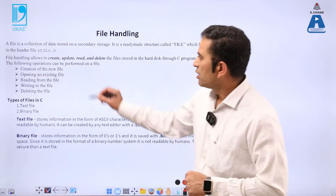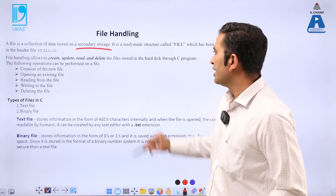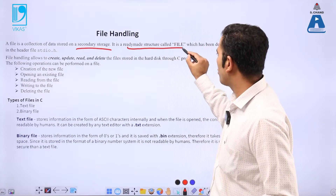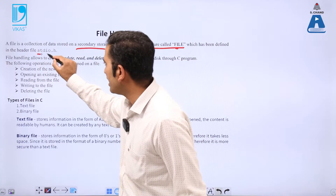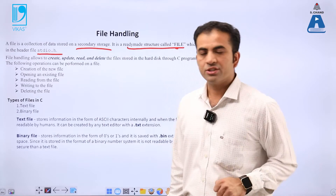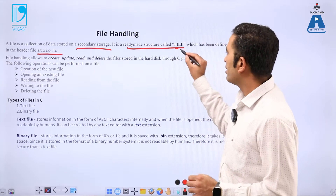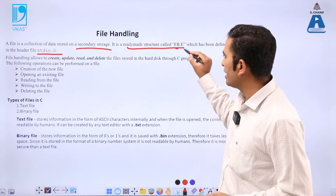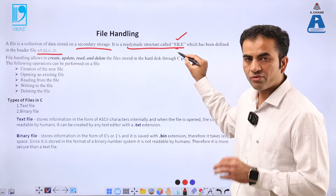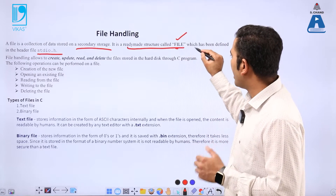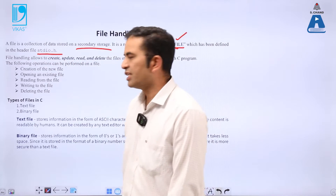A file is a collection of data stored on secondary storage. It is a ready-made structure called FILE, which has been defined in the header file stdio.h. When we are using file handling, this pre-defined ready-made structure is provided, which is called FILE and is always written in uppercase.